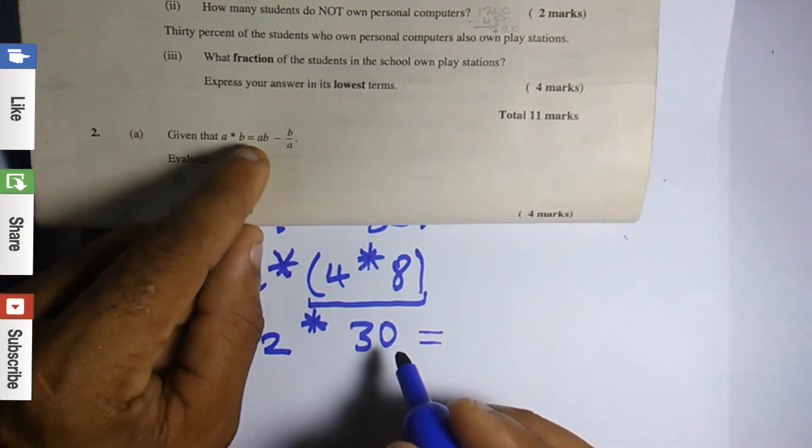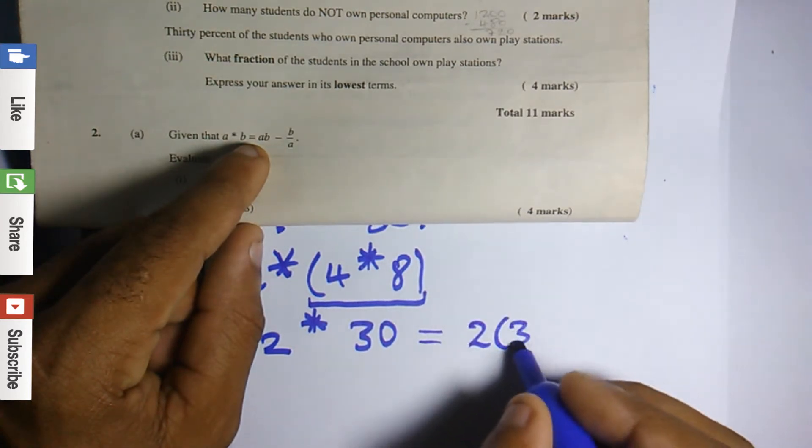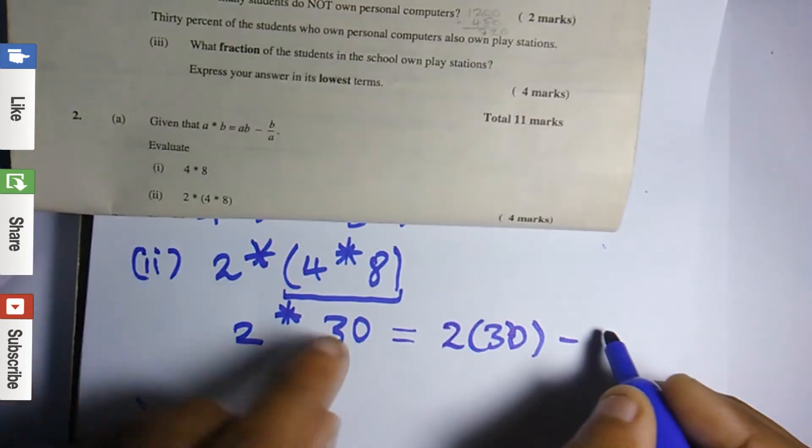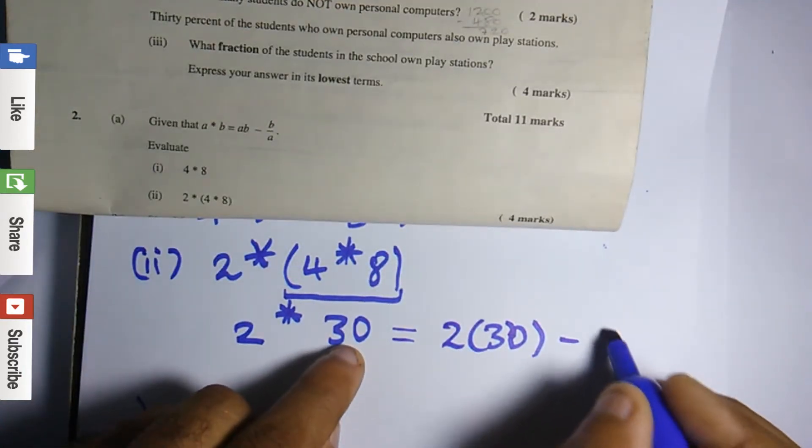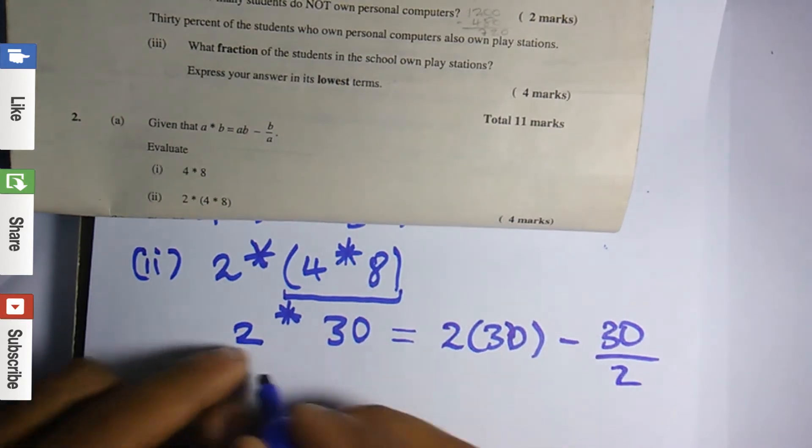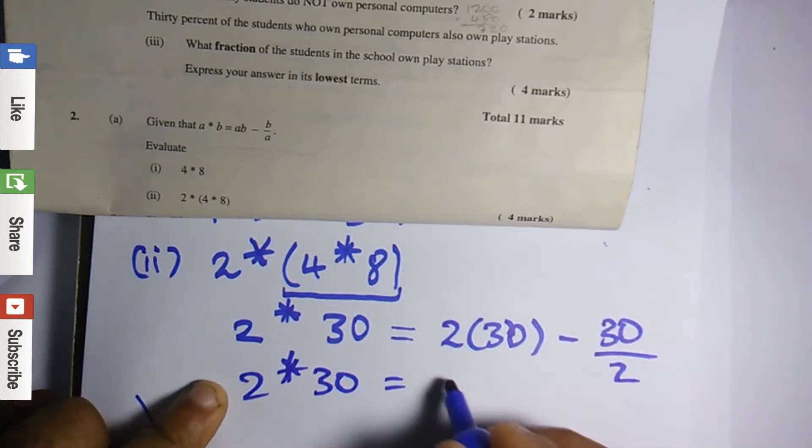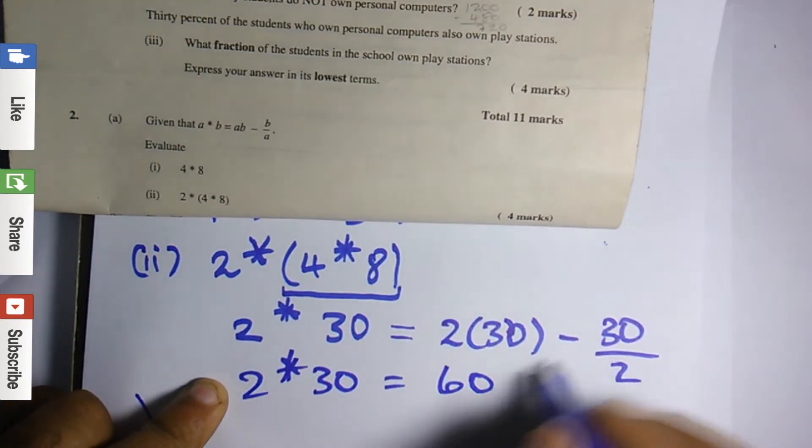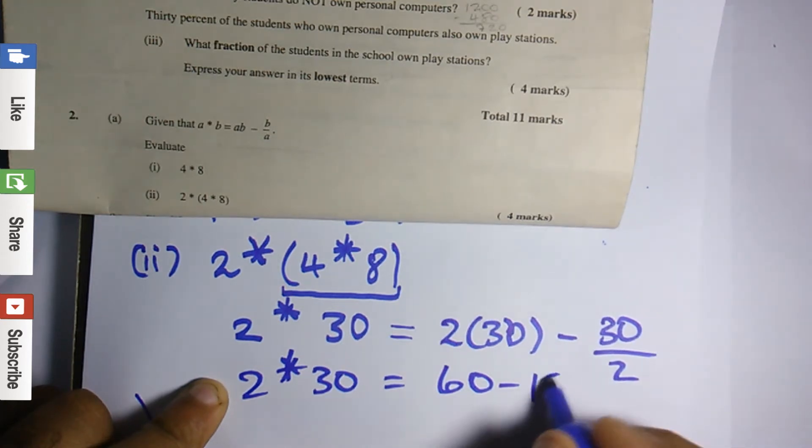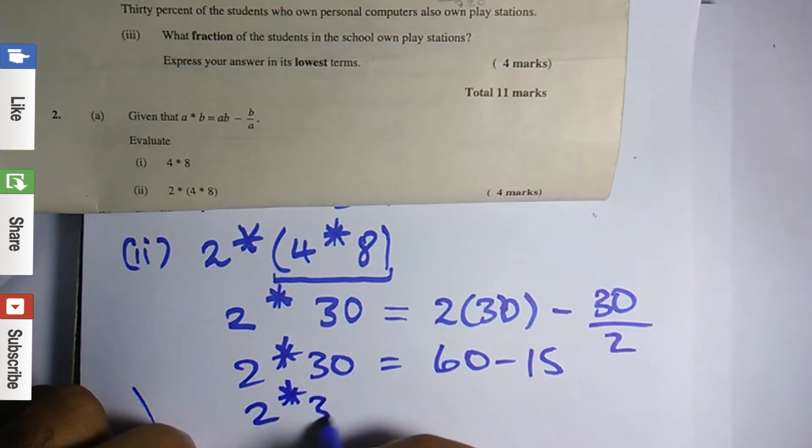ab up here, we're going to multiply 2 times 30. So it's 2 times 30 minus b. The new value of b is 30, divided by a. The new value of a is 2. So 2 star 30 is equal to 2 times 30 is 60, and 30 divided by 2 is 15. So 2 star 30 is equal to 45.